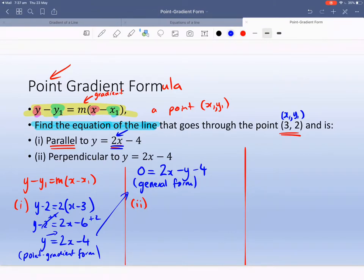Part 2 was that we want to find something perpendicular to the same equation. If it's perpendicular, that means it's going to be the negative reciprocal of 2. So the negative reciprocal of 2, I'm going to call this M2, it's going to be negative 1 over 2 because our original gradient was 2.